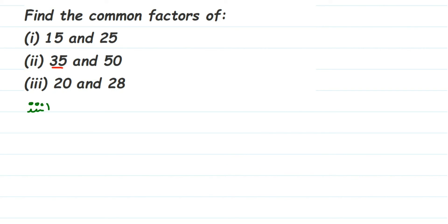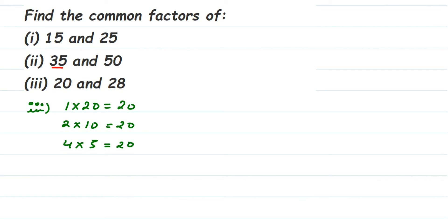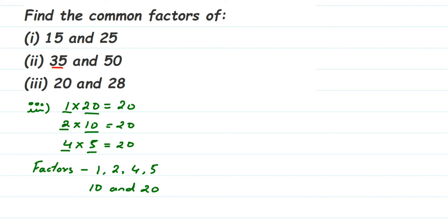The third question is 20 and 28. First, the factors of 20: 1 × 20 = 20. Then 2 × 10 = 20. It doesn't go in the 3 table. It goes in the 4 table: 4 × 5 = 20. Since I've written 4 × 5, I won't write 5 × 4. It doesn't go in the 6 or 7 table, or any other table — the next would be 20 × 1, which I've already written. So the factors of 20 are: 1, 2, 4, 5, 10, and 20.